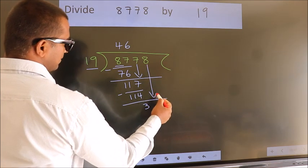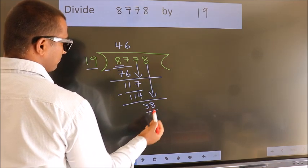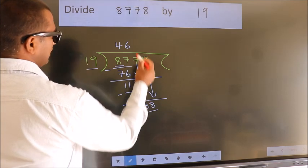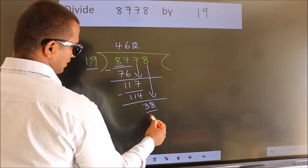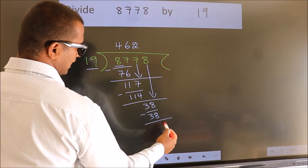down the next number, so 8 down, so 38. When do we get 38 in the 19 table? 19 times 2 is 38. Now we subtract. We get 0.